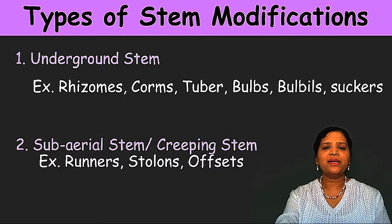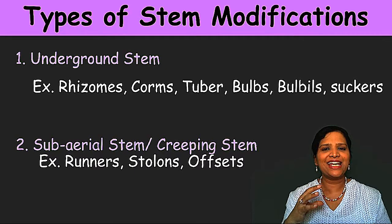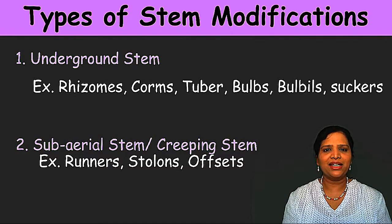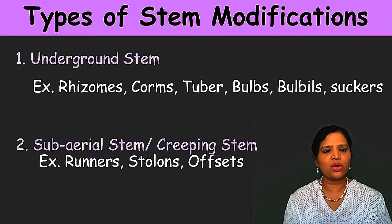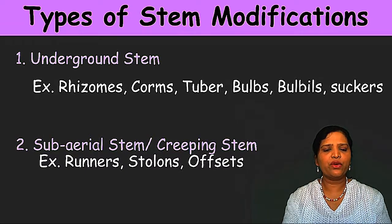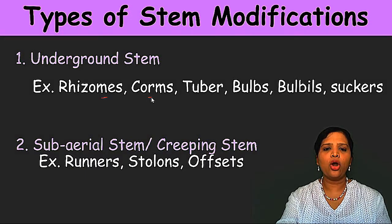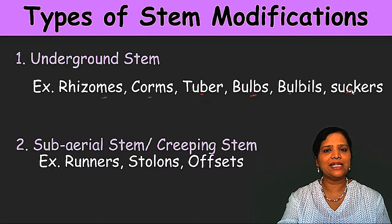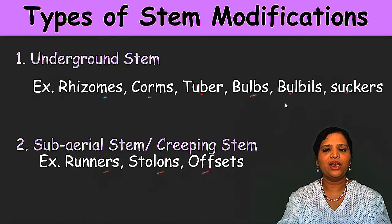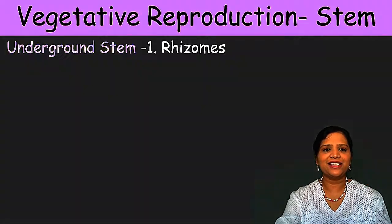The stem of a plant gets modified for its asexual method of reproduction — not in every plant, but in a few. This can be categorized into two types: underground stem modification and sub-aerial or creeping stem modification. Examples of underground stem modifications are rhizomes, corms, tubers, bulbs, bulbils, and suckers. Examples of sub-aerial or creeping stems are runners, stolons, and offsets. We are going to study all these in detail. Let us start with the first one: rhizomes.